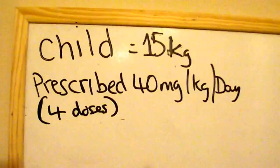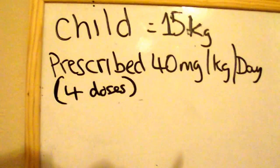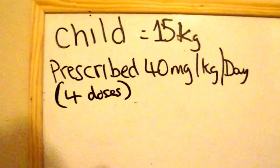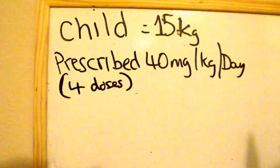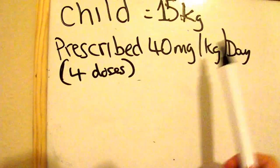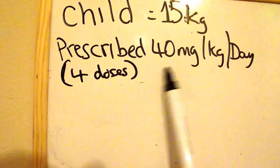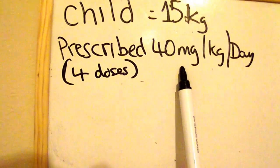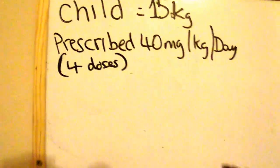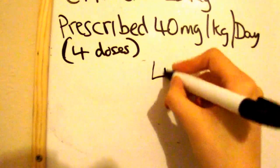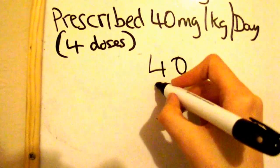So I'm going to go ahead and go straight to the first calculation. Here we've got a child that's 15 kilograms and it is prescribed a drug that's 40 milligrams per kilogram per day. So I'm just going to explain what it means by this. If the child was 1 kilogram, they would need 40 milligrams of medicine but the child's 15 kilograms. So what you're needing to do straight away is multiply 40 and 15.